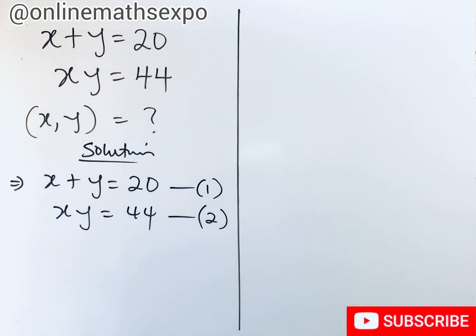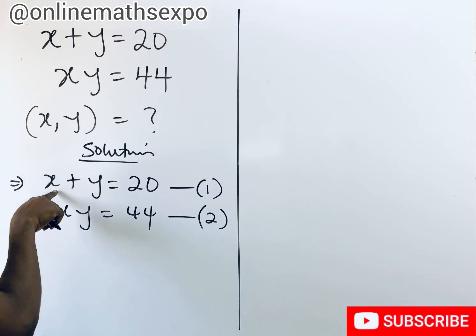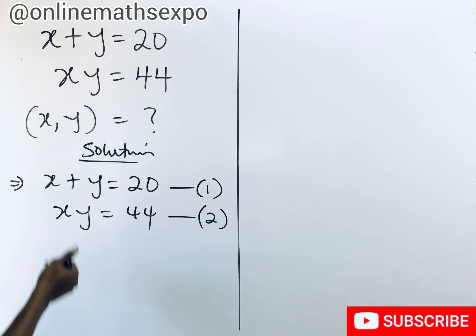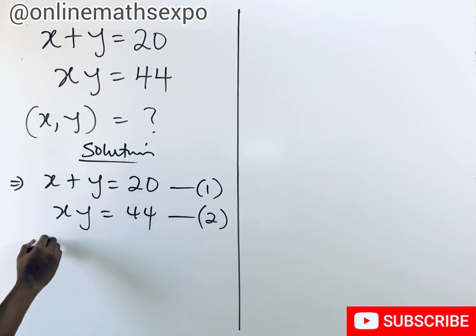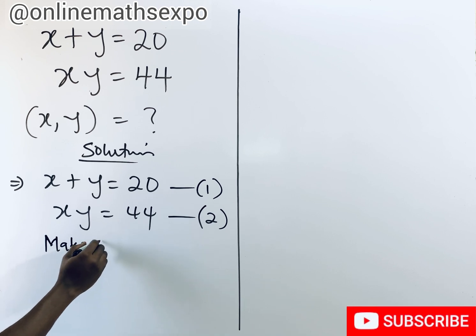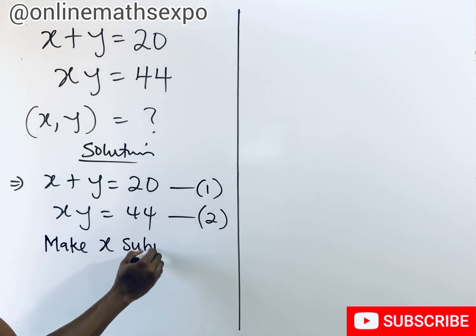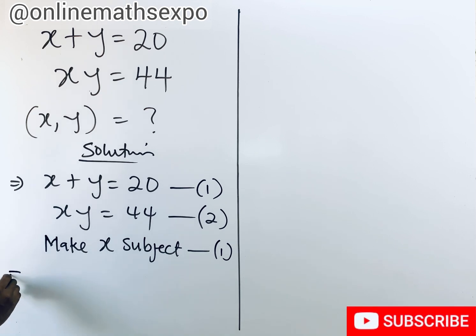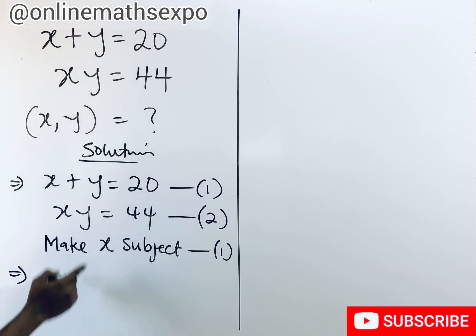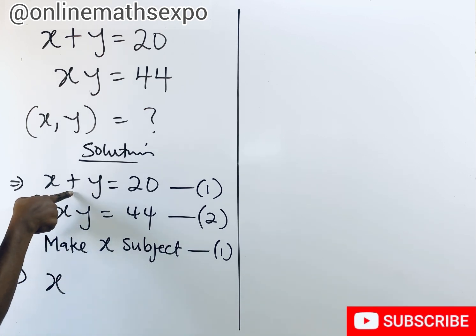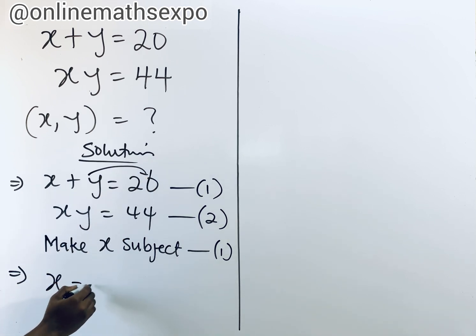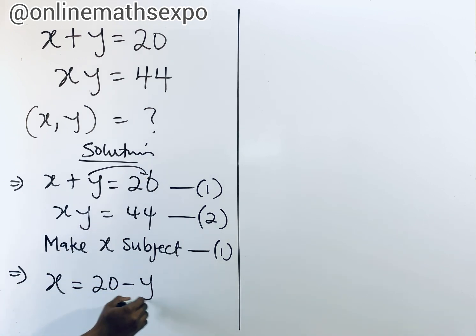So what we do first is we can choose to make x the subject from equation 1, or you make y the subject — whichever one you want to. So let's make x the subject from equation 1. To remove the y, you see it's addition, so you're going to subtract from both sides. So x will be 20 minus y.